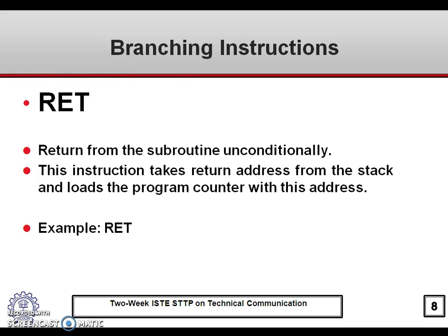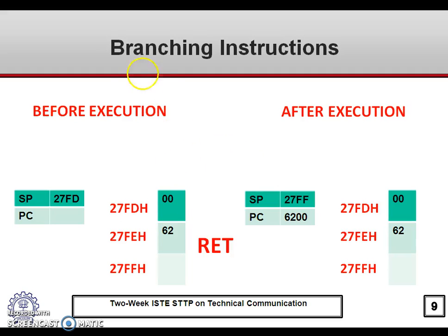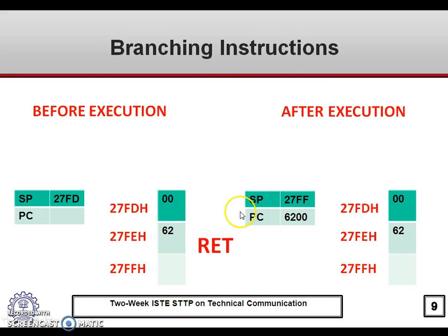The RET instruction is used to return from a subroutine unconditionally. It takes the return address from the stack and loads the program counter with that address. In the example, before execution the stack pointer contains 27FDH, and the return address stored in the stack is 6200H. When RET executes, it first takes 00 from where the stack pointer points, increments the stack pointer, then takes 62, loading 6200H into the program counter. After execution, the stack pointer is 27FFH and the program counter is 6200H.